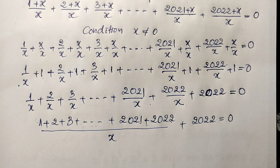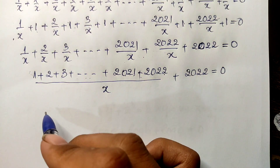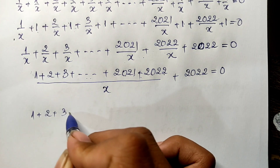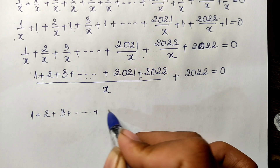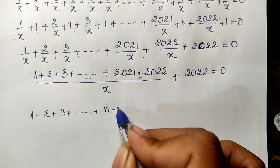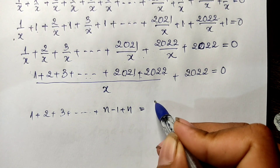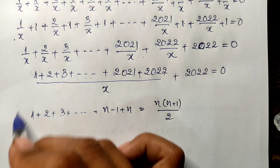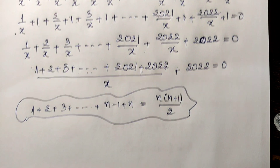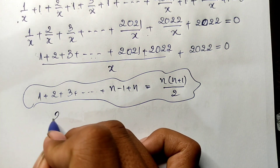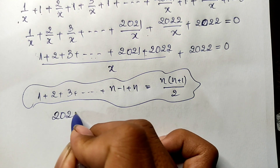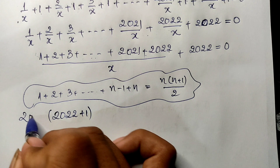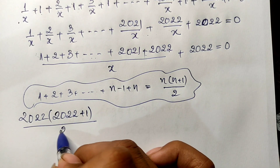Using the summation rule — 1 plus 2 plus 3 plus ... plus n equals n times (n plus 1) divided by 2 — with n equal to 2^22, I get: 2^22 times (2^22 plus 1) divided by 2, divided by h, plus 2^22, equal 0.